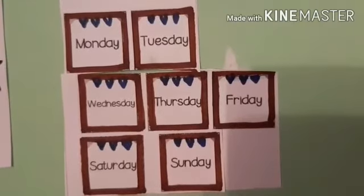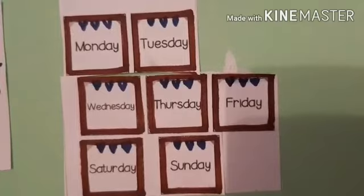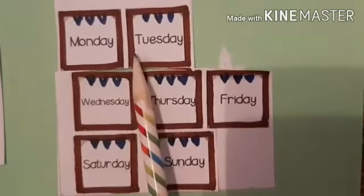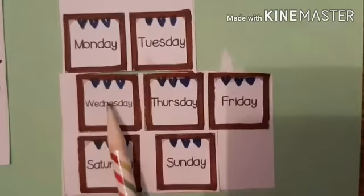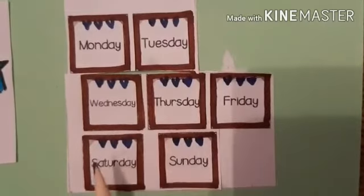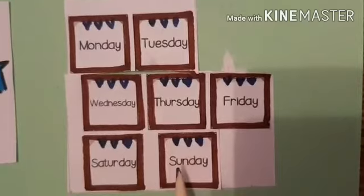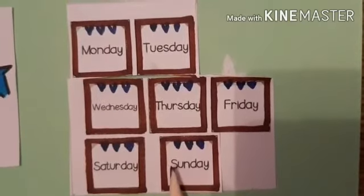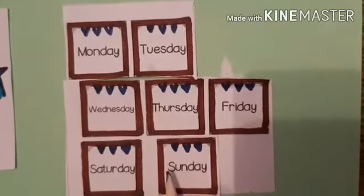There are 7 days in a week. Let's count: Monday, Tuesday, Wednesday, Thursday, Friday, Saturday and Sunday, which is the 7th day of the week.